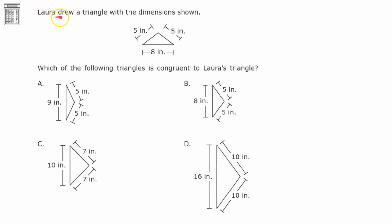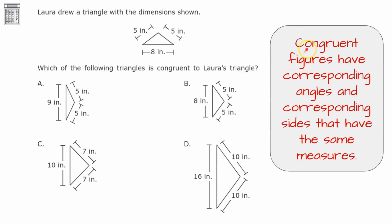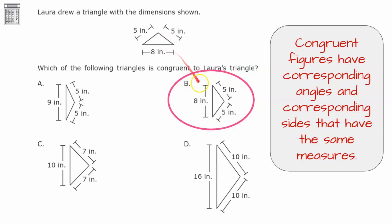Laura drew a triangle with dimensions five, five, and eight. Which of the following triangles is congruent to Laura's triangle? Congruent figures have corresponding angles and corresponding sides with the same measures, so we look for a triangle with side lengths of five, five, and eight. The answer is choice B, which has corresponding sides eight to eight and five to five.